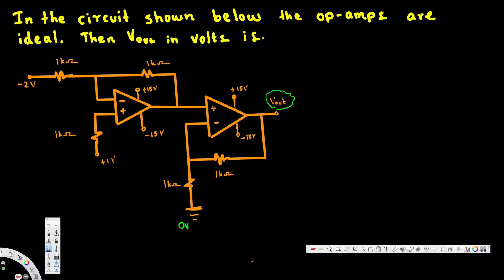First, we need to figure out whether each op-amp is non-inverting or inverting. If the voltage input is applied to the positive terminal, it's non-inverting; if applied to the negative terminal, it's inverting. For the first op-amp, the negative terminal is connected to ground, so there's no voltage there — the input only goes to the positive terminal, making this a non-inverting op-amp.